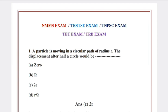Question 1: A particle is moving in a circular path of radius r. The displacement after half a circle would be? Answer C.